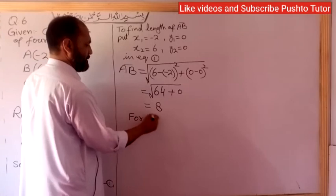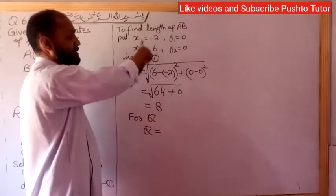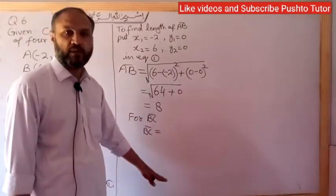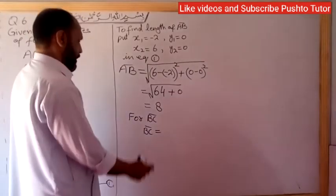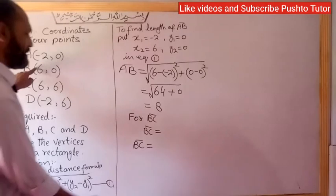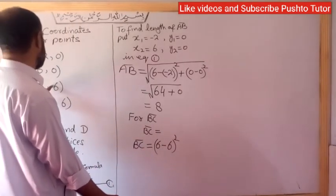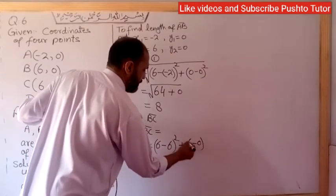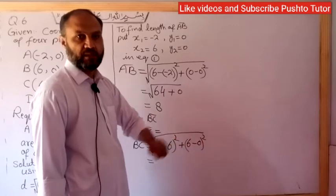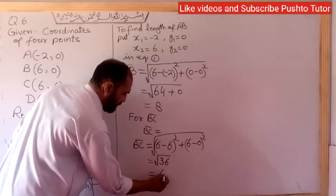Now finding BC. For B(6,0) and C(6,6): (6 - 6)² + (6 - 0)² = 0 + 36 = 36. Under square root of 36 gives BC = 6.